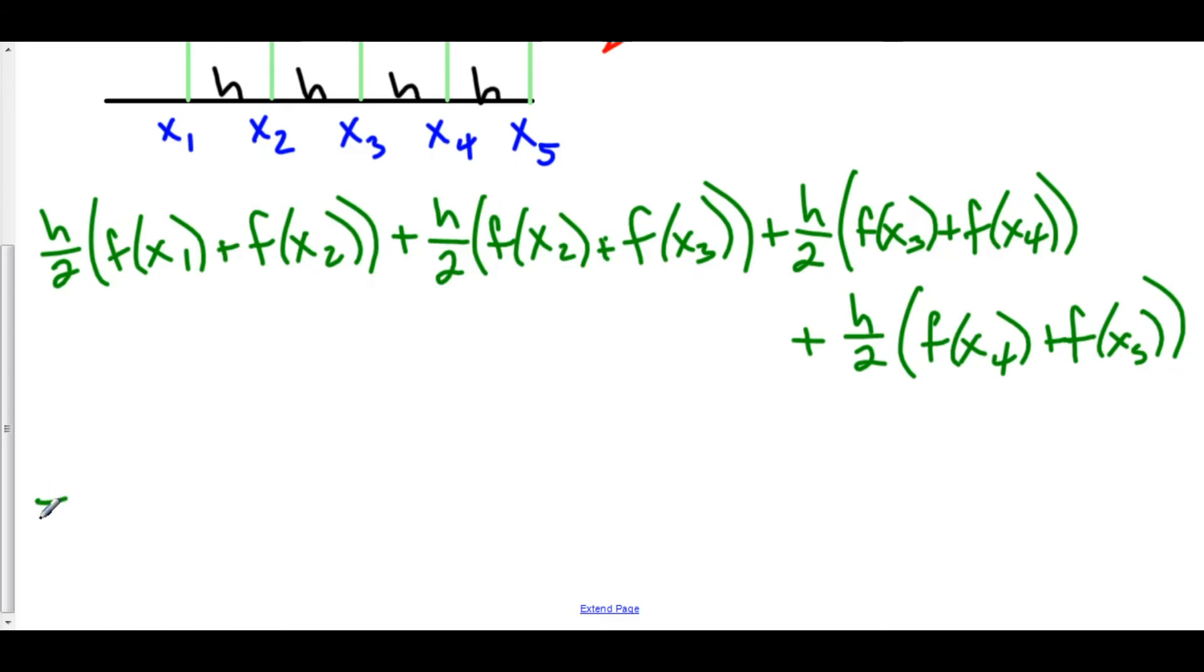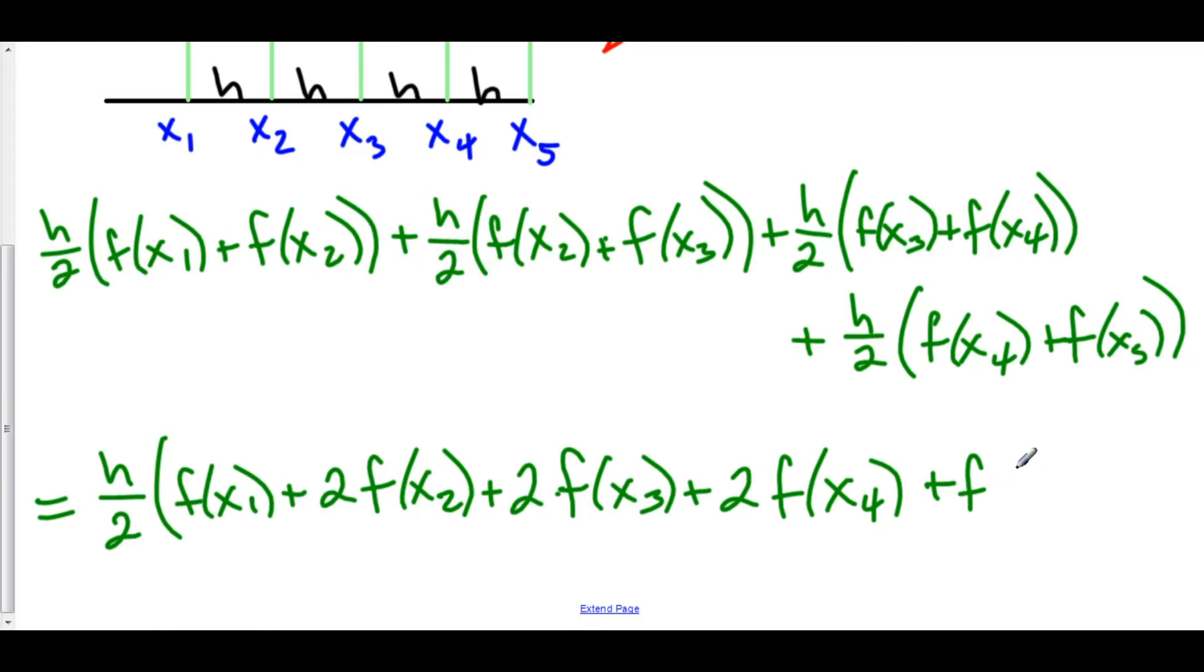If we factor out h over 2, we now get h over 2 times f of x sub 1, plus 2 f of x sub 2. We have 2 x sub 3s, here's 1 and here's another 1, so we get 2 times f of x sub 3, plus 2 times x sub 4. Here's 1 f of x sub 4 and here's my second f of x sub 4. And finally, there's only 1 f of x sub 5 left over. This is the formula for trapezoidal rule.